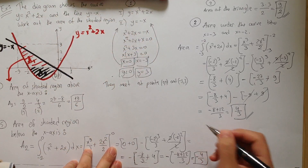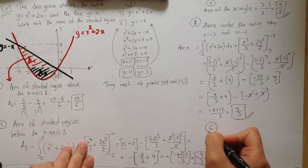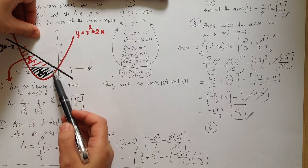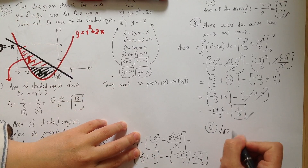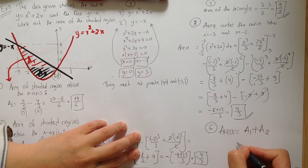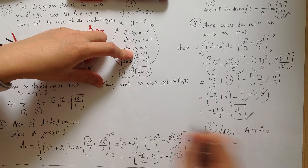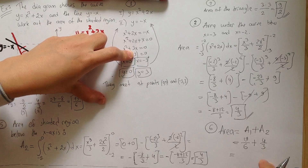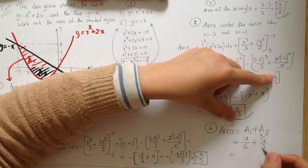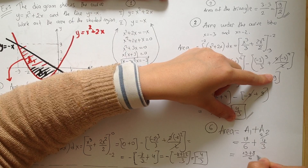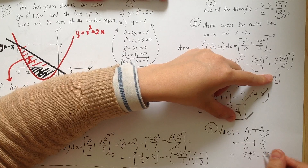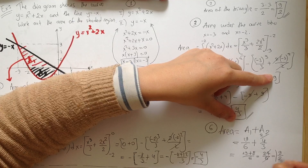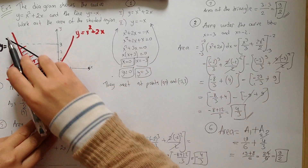The sixth and final step: add both areas together since we need the total shaded region. Area equals A1 plus A2, so 19 over 6 plus 4 over 3. Taking the common denominator and multiplying the second fraction by 2: 19 over 6 plus 8 over 6 equals 27 over 6. Simplifying by 3 gives 9 over 2. This is the exact total area between the line and the parabola.